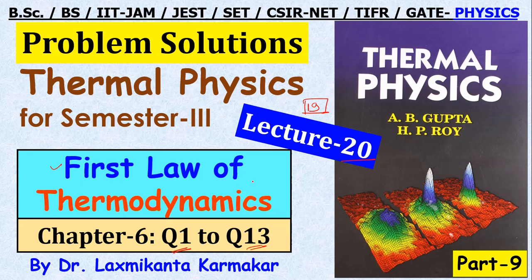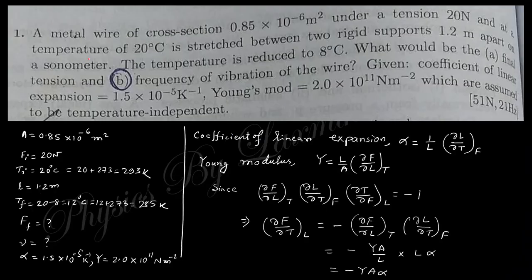Let's start question number 1, which says: a metal wire of cross-section area under tension 20 Newton at temperature 20 degrees centigrade is stretched between two rigid supports 1.2 meters apart on a sonometer. The temperature is reduced to 8 degrees centigrade. What would be the final tension and frequency of vibration of the wire?